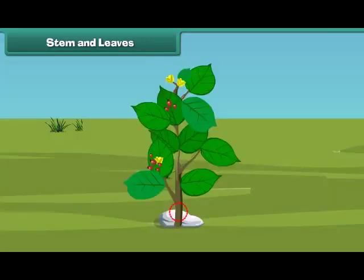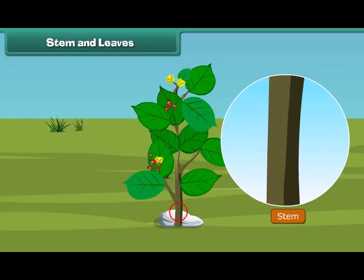The next part of a plant is the stem. A stem is the hard part of the plant which grows above the ground. It bears leaves, fruits and flowers. A stem also supports the plant.